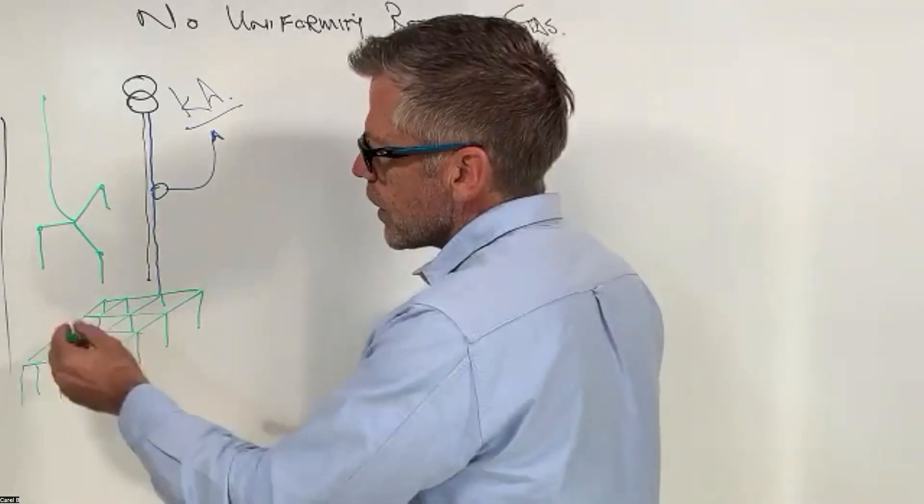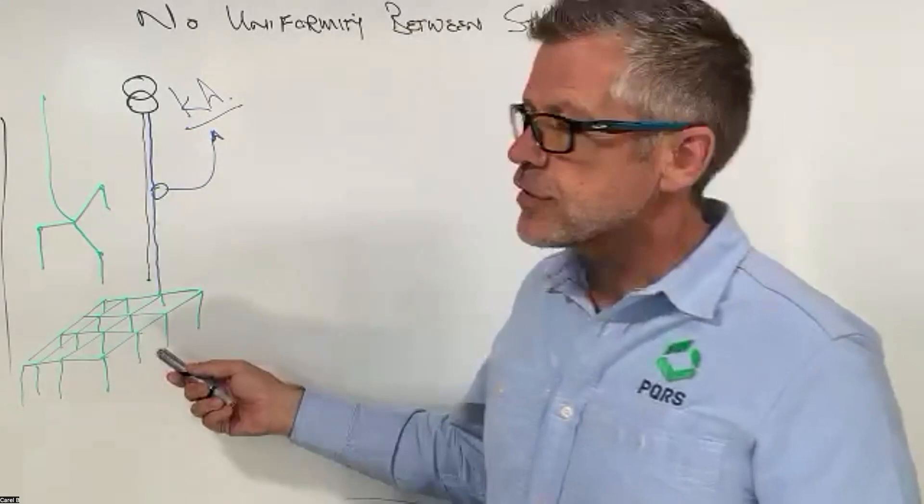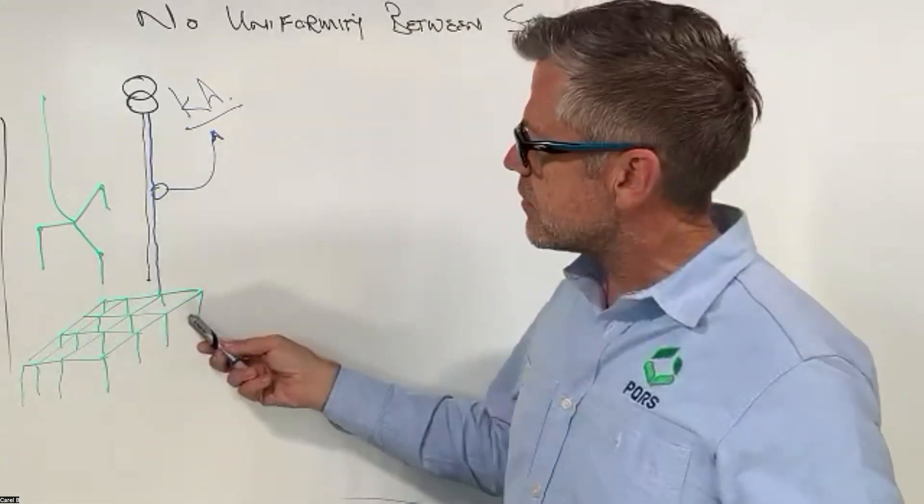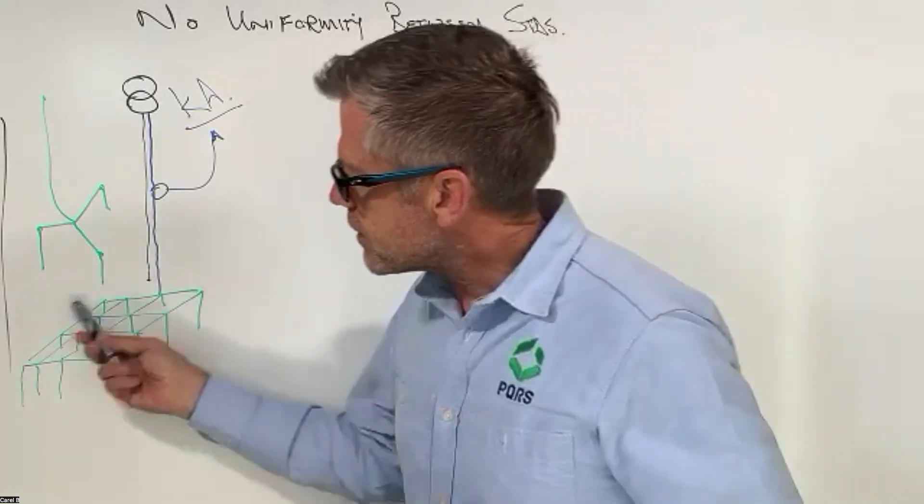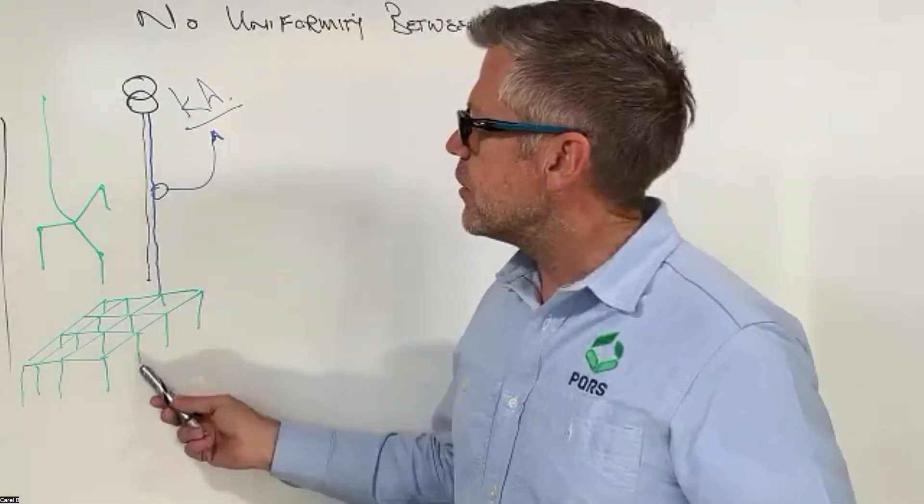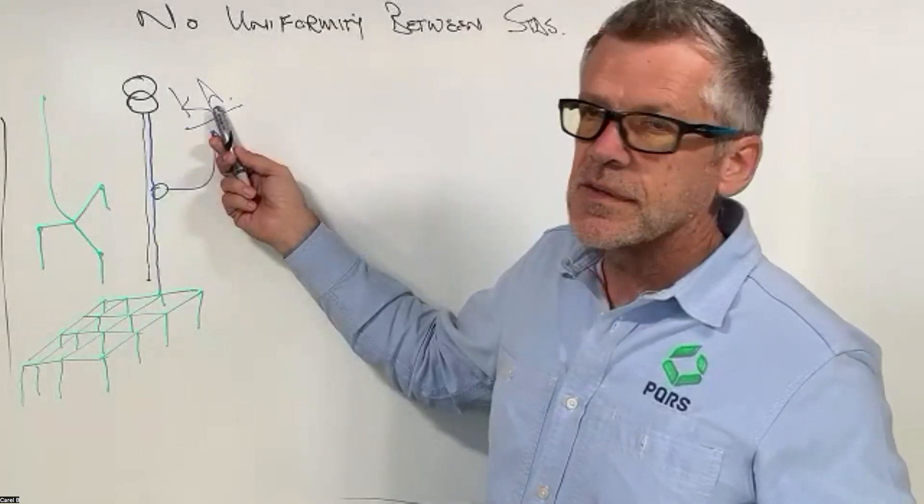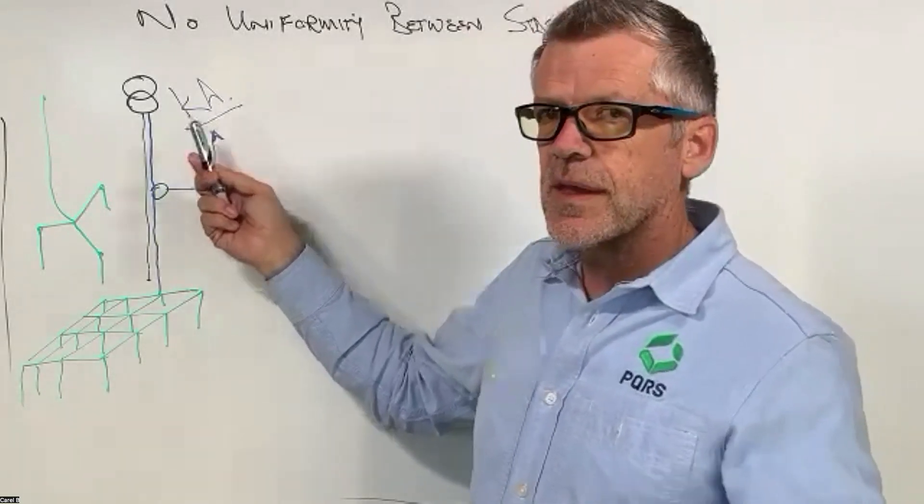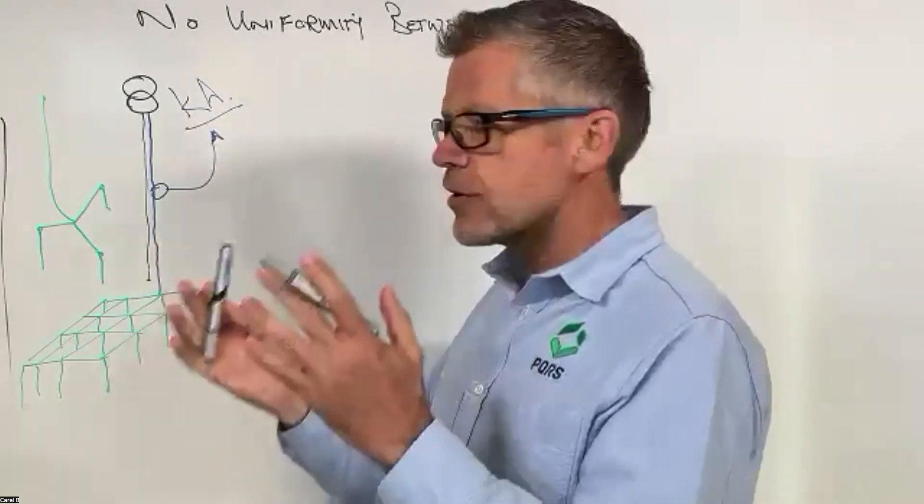And they come to where they want to build the substation or where they need to put the earth mat in, and they measure the soil resistivity values. And that tells them how big this thing has to be in order to dissipate the amount of fault current coming from the transformer in the event of a fault condition.